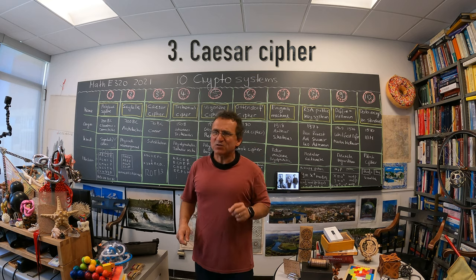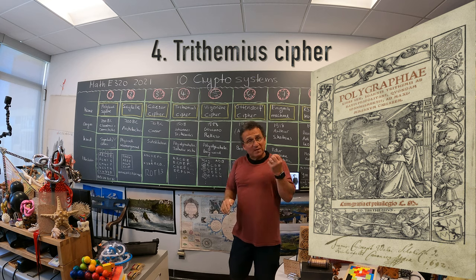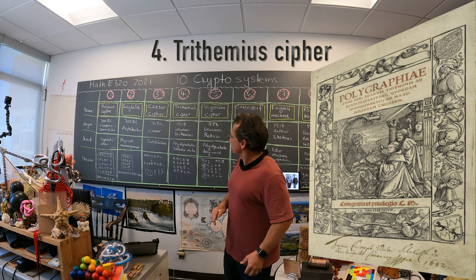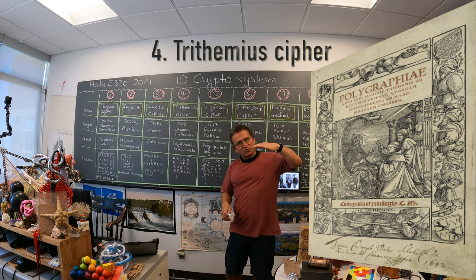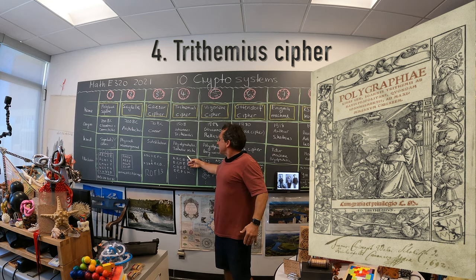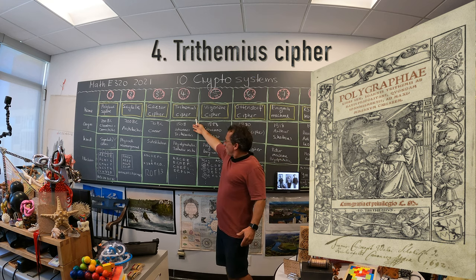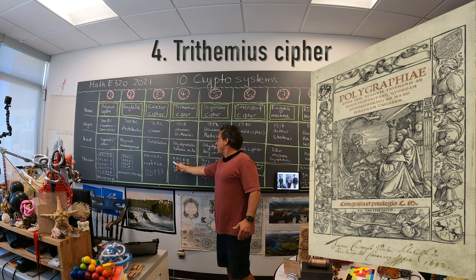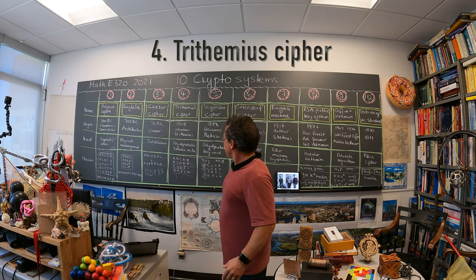Cipher number four is a more sophisticated version of the substitution cipher called polyalphabetic, because you use different substitutions and change them periodically. In the simplest case, as Trithemius described in 1508, you use one substitution for the first letter, a different one for the second letter, and so on. By using different substitutions, you change the frequency distribution, making it no longer so easy to crack.